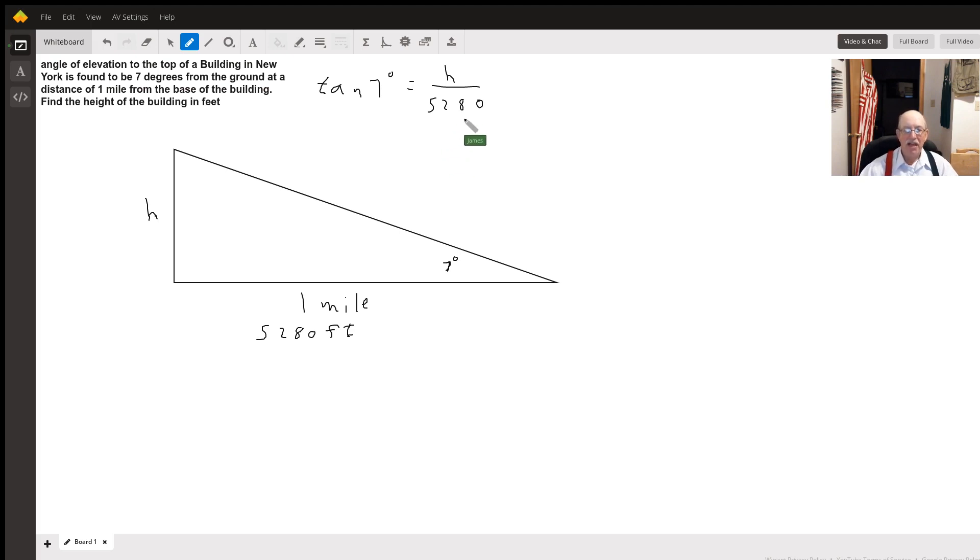We want to solve for H. So we're going to multiply both sides by 5,280. So now we get 5,280 times the tangent of seven degrees equals H.